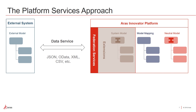What we have here is the model mapping — this is going to tell us the how and the when we're going to bring in that data from the external model into our neutral model. The model mapping is a configuration structure that includes data about how the properties need to be mapped as well as some logic for when that mapping needs to occur.